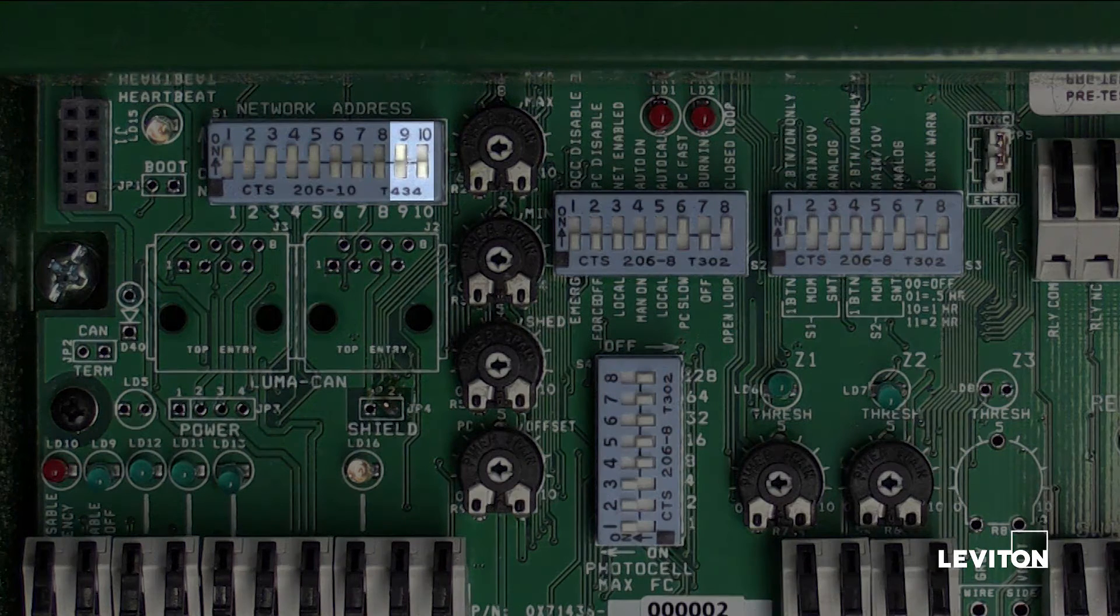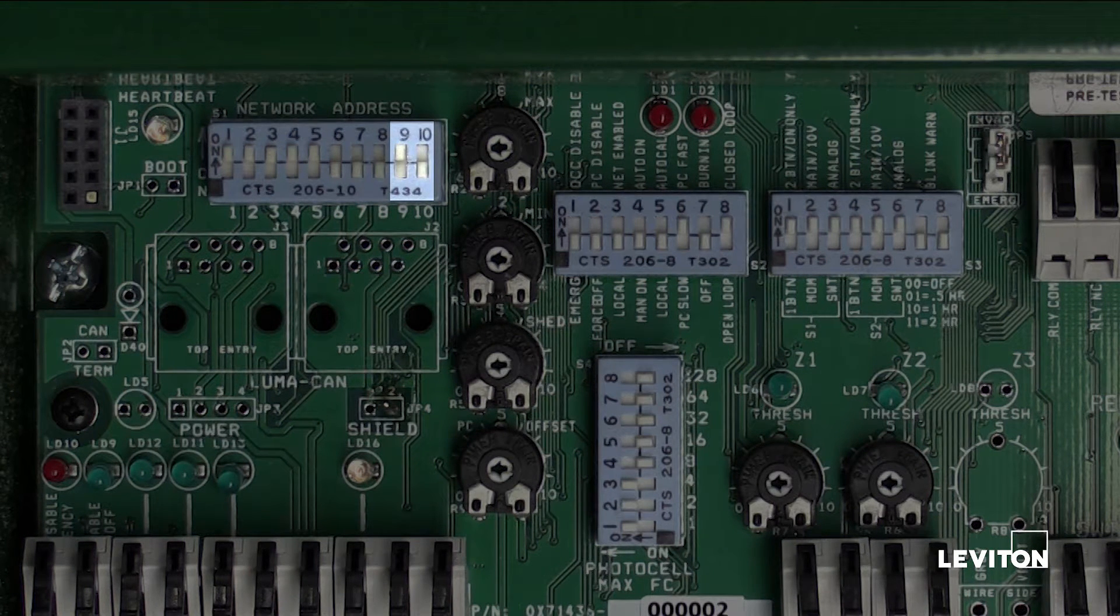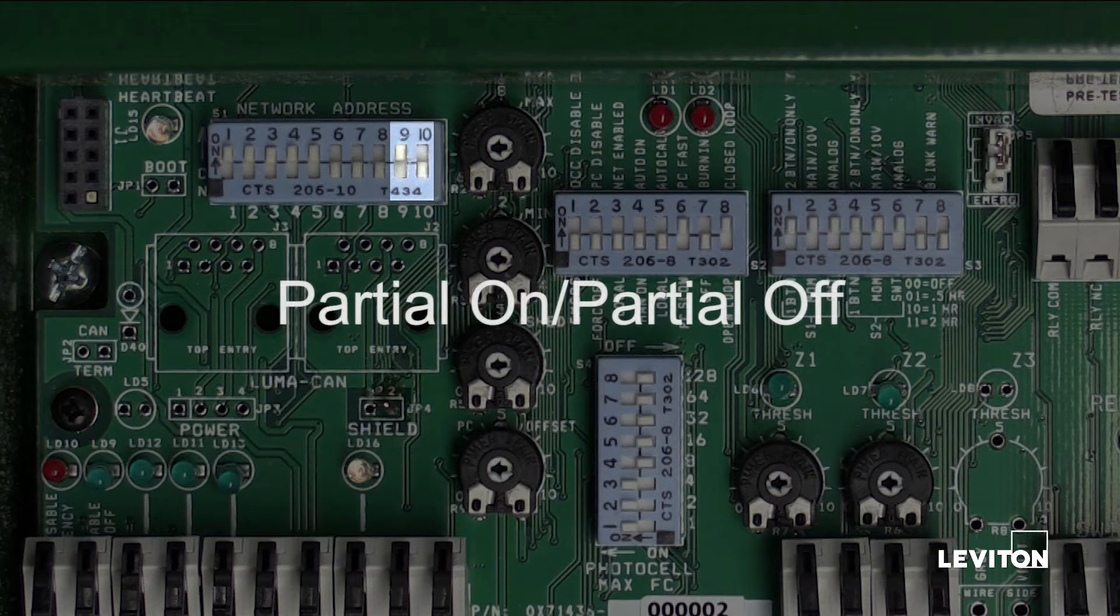Dipswitches 9 and 10 are used to activate and deactivate partial on and partial off.